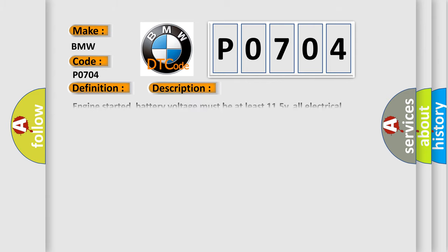And now this is a short description of this DTC code. Engine started, battery voltage must be at least 11.5V, all electrical components must be off, parking brake must be engaged to keep daytime driving lights off, automatic transmission selector must be in park, and the ground between the engine and the chassis.